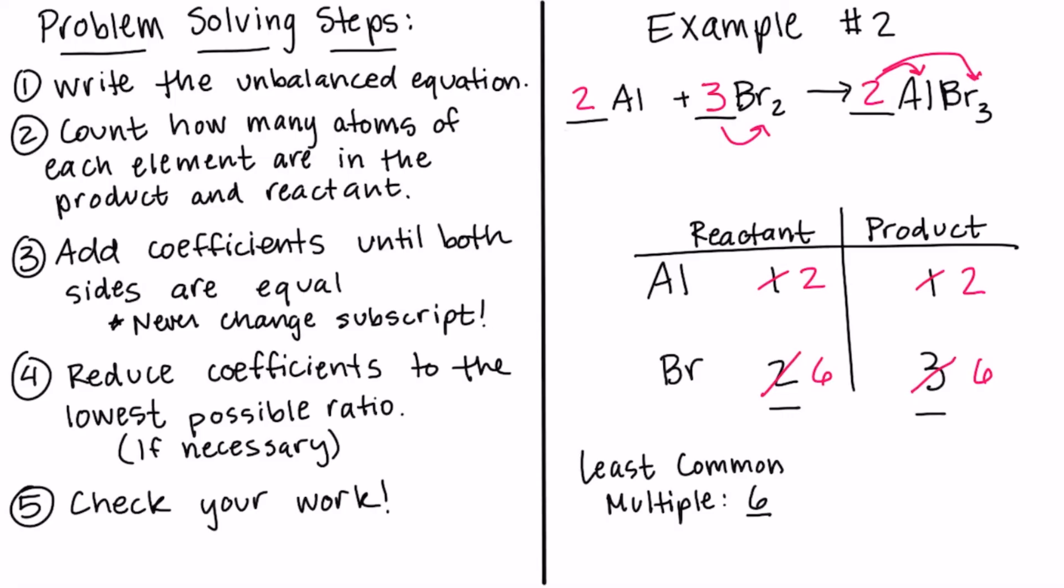Step four, we have to reduce the coefficients to the lowest possible ratio. So we're just going to check. We've got a two to three to two ratio according to these coefficients. So it's already reduced. We can't reduce that any further.